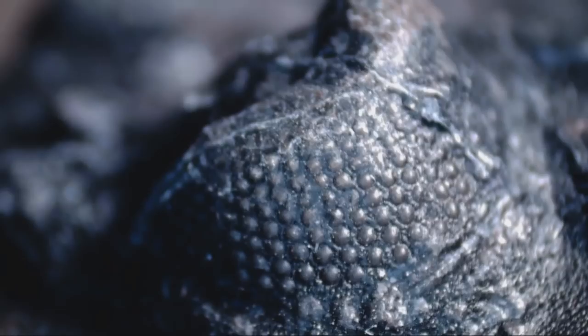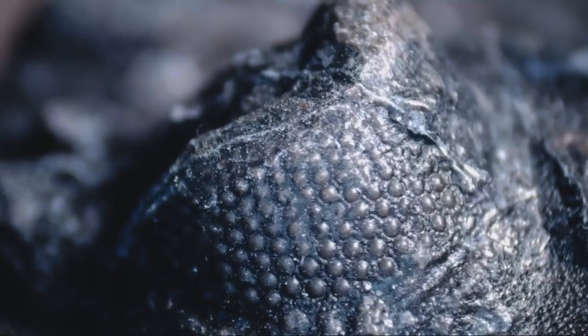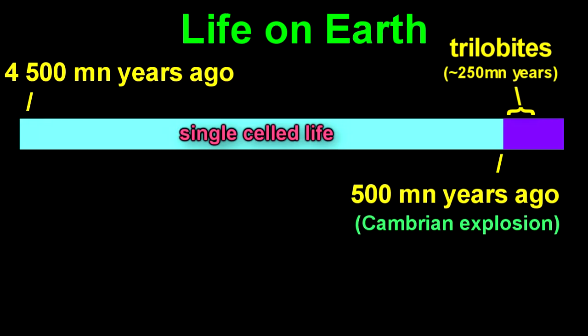Now the trilobite was one of the most successful creatures ever to inhabit the Earth. Indeed, they hung around for about 250 million years. Humans, for comparison, if you're generous, have been around for about 2 million years, and modern humans only about one twentieth of a million years. So that was 200 million years of stone eyes.